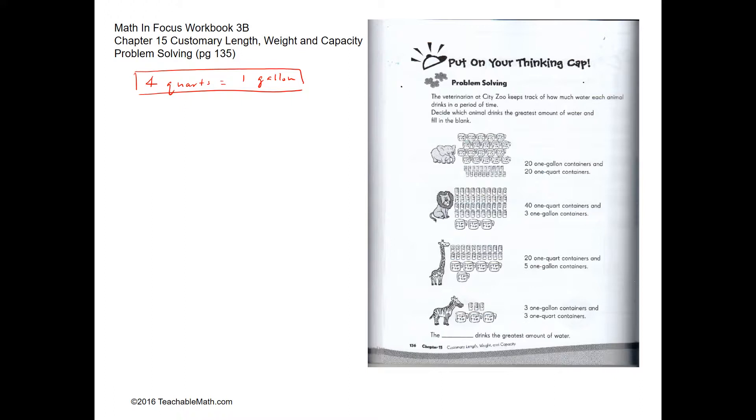Let's look at the first part. We have 20 gallons and 20 quarts. 20 quarts will actually make 5 gallons. So this would be 25 gallons.